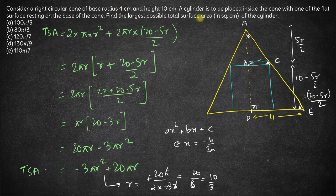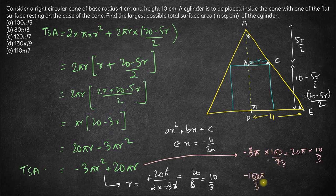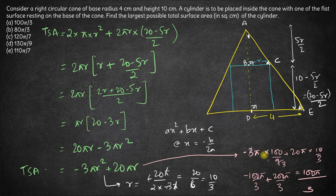The question asks to find the largest possible surface area. Substituting R equals 10/3: minus 3π into R squared, which is 100/9, plus 20π into R, which is 10/3. This gives minus 100π/3 plus 200π/3. Minus 100π plus 200π is plus 100π, so the maximum surface area is 100π/3. Option A here is the right answer. Thank you.